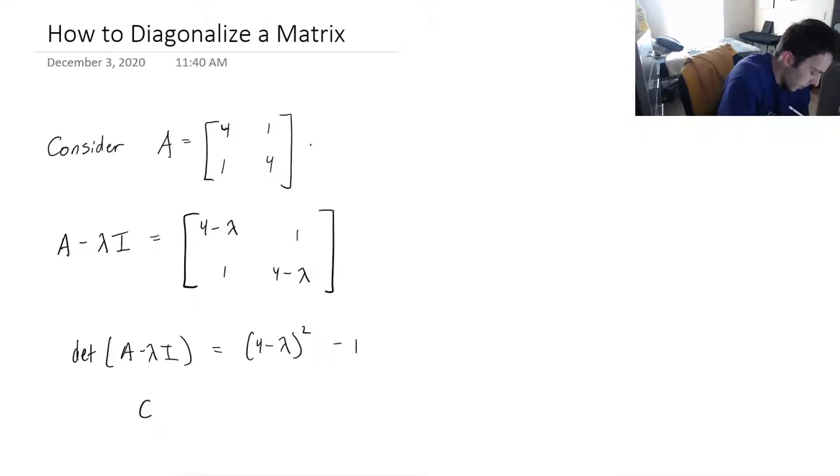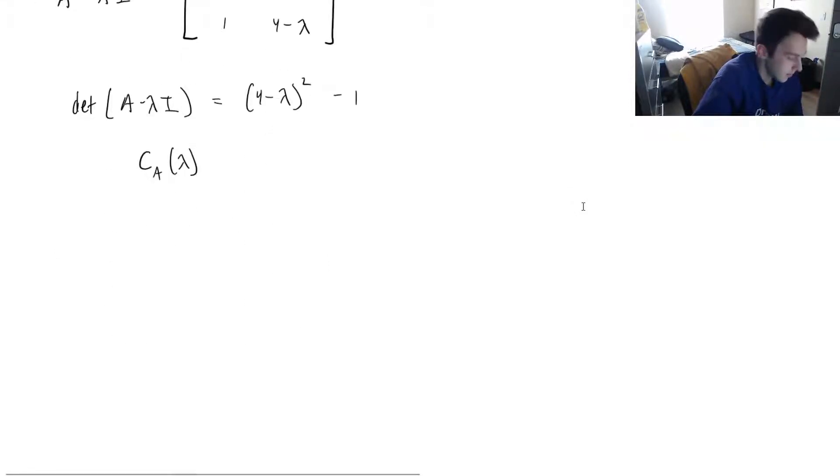Scrolling down, this is going to be 16 minus 8 lambda plus lambda squared minus 1. Our characteristic polynomial is then lambda squared minus 8 lambda plus 15.